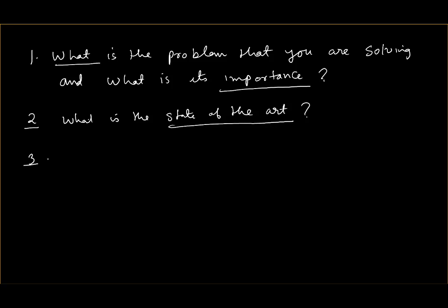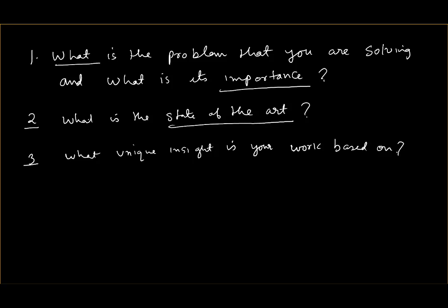When you talk about your work, you will talk about your solution with respect to what they have proposed. The importance of your work will not come out unless you talk about what others have done — these are their strengths, these are the weaknesses. Once you have talked about the problem and the state of the art, you set the stage for your work so that the audience understands the importance of the problem and the background. Now the third question is: what unique insight is your work based on?